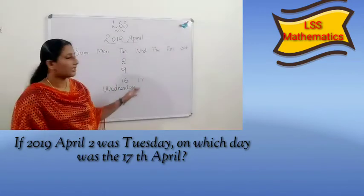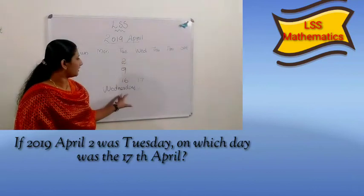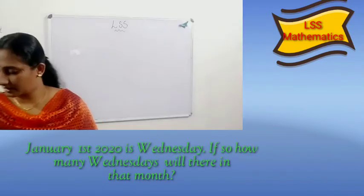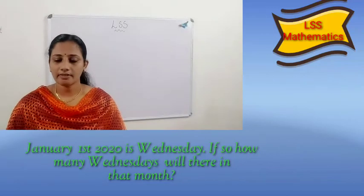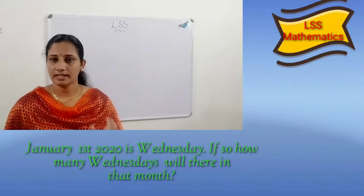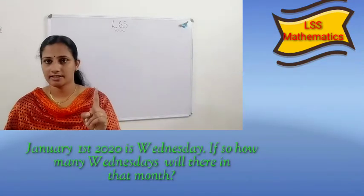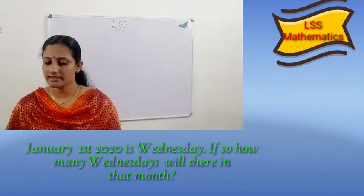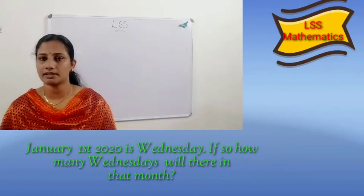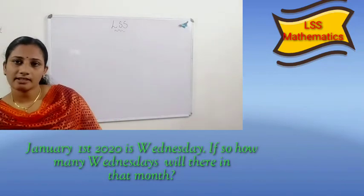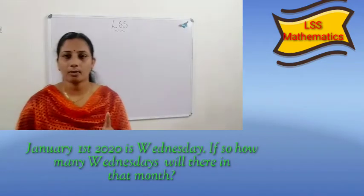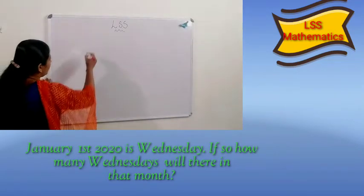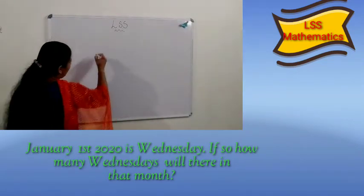If the calendar is given like this, how do you find the answer like this? Children, one more calendar question: January 1st 2020 is Wednesday. If so, how many Wednesdays will there be in that month? January 1st 2020 is Wednesday.